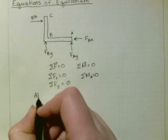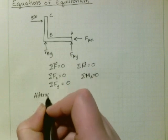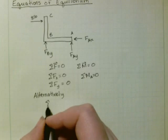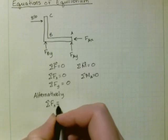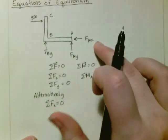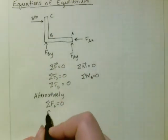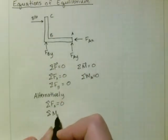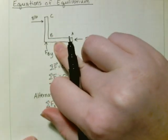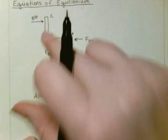Okay, alternatively, we could have that the sum of the forces in the x direction is equal to 0. Right, so that would give us Fax very easily. Then we could do that the sum of the moments about A is equal to 0. That would give us Fby, because these two forces would be acting.